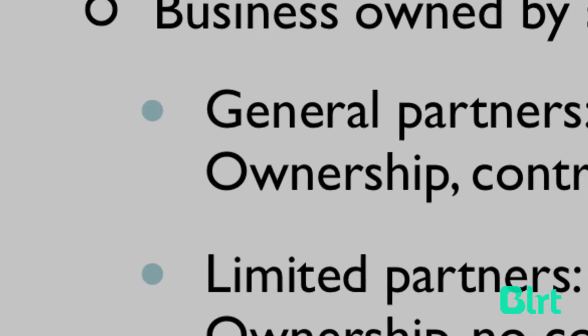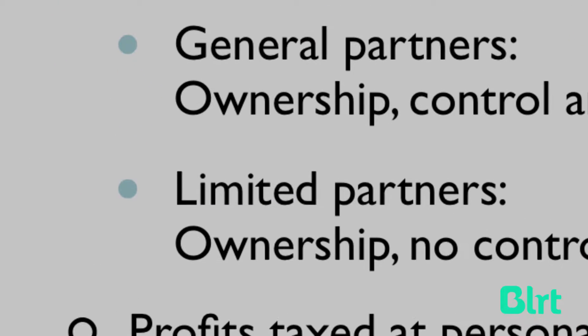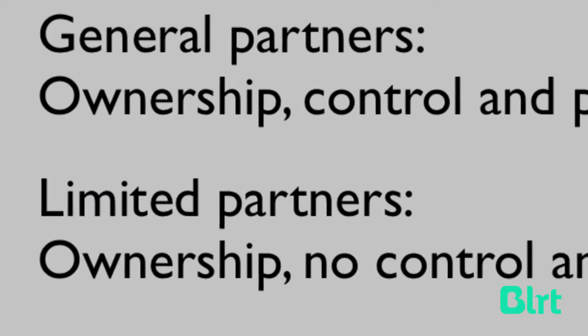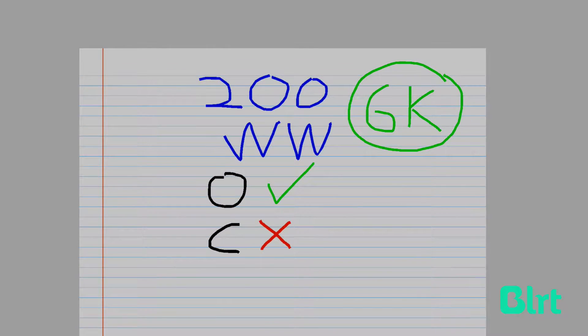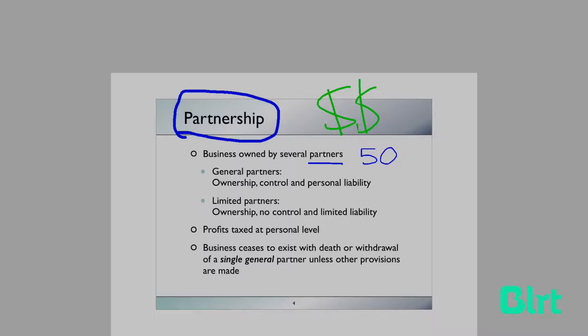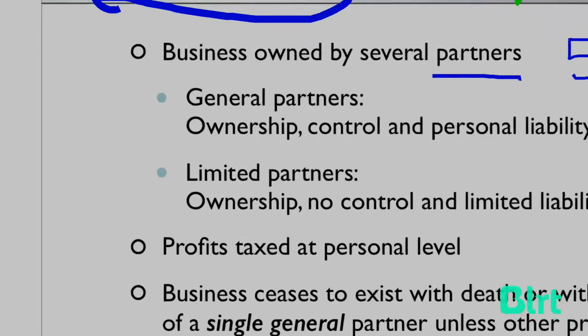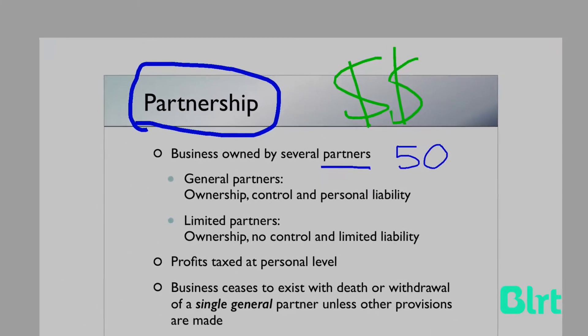The characteristics of a general partner are: ownership of the company, control of the company, and personal liability. Limited partners, on the other hand, also have ownership, but the differences are in control and liability — limited partners have no control and have limited liability. Going back to our Woolworths example, that would be a limited partner, because you own the company but have no control and have limited liability.